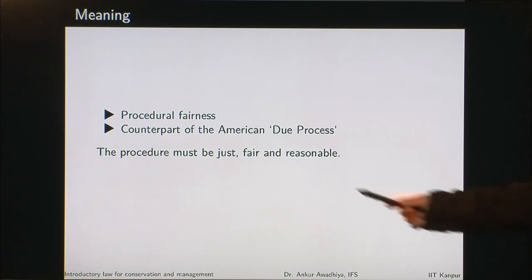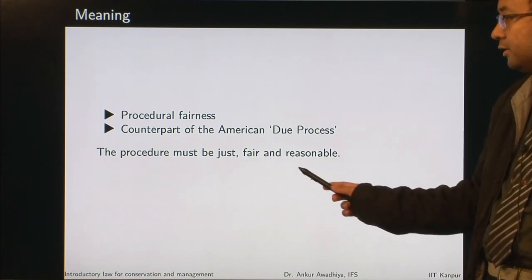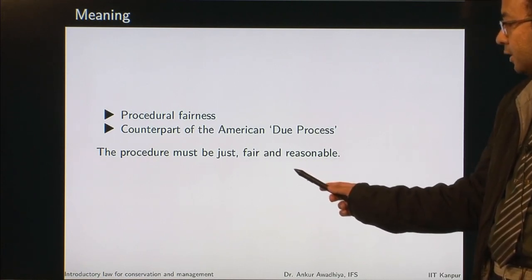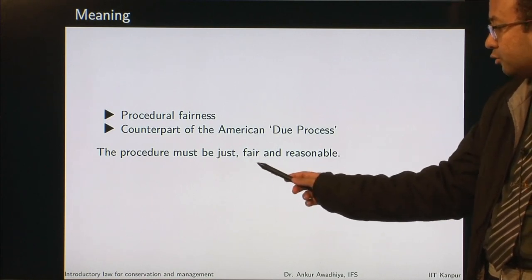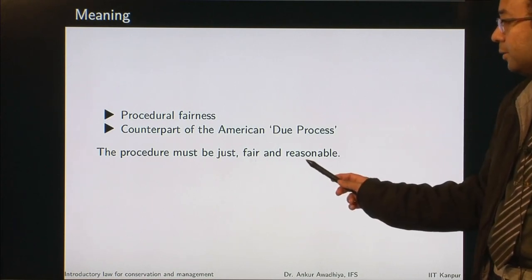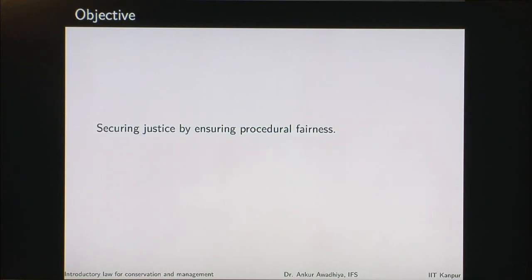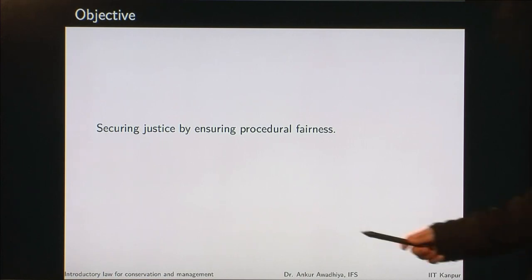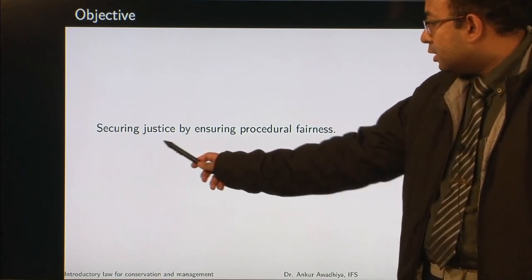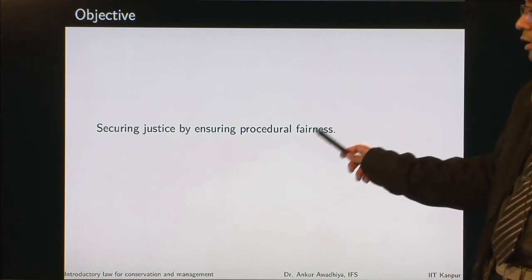The procedure must be just, fair, and reasonable. It has to be just, it has to be fair, and you should be able to give reasons for why you chose a particular procedure. The objective of natural justice is to secure justice by ensuring procedural fairness — we want to ensure that the processes are just.